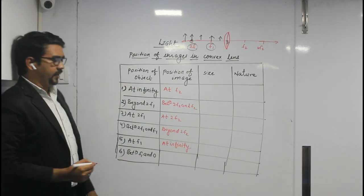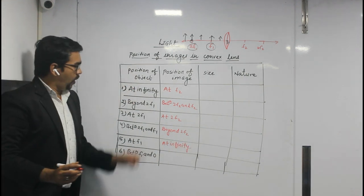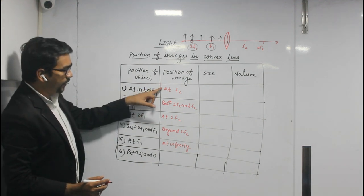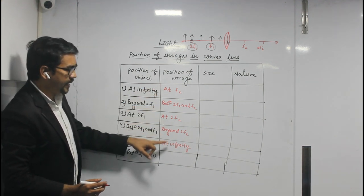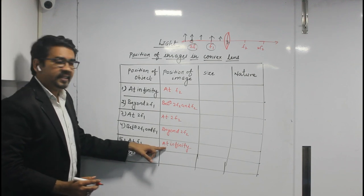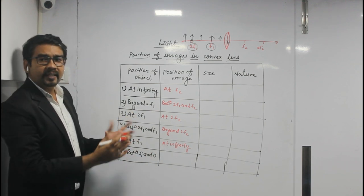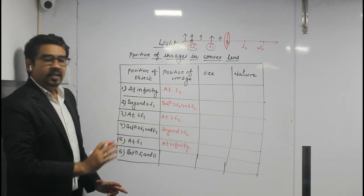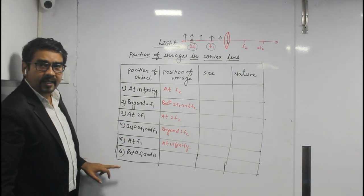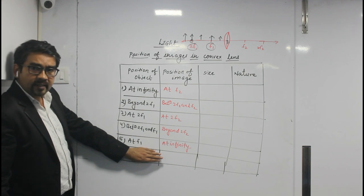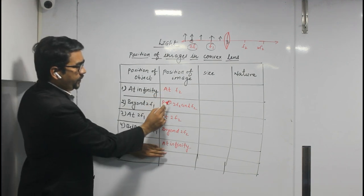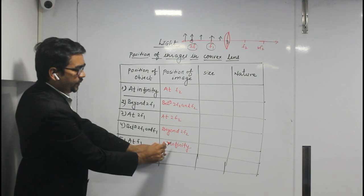So this is the simple trick. All six positions are very important. You hide the sixth position, and from the fifth you start going: fifth, fourth, third, second, first — reversing the order to find the corresponding image positions.